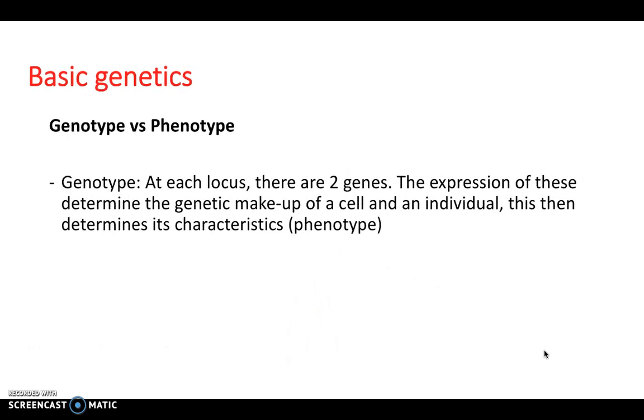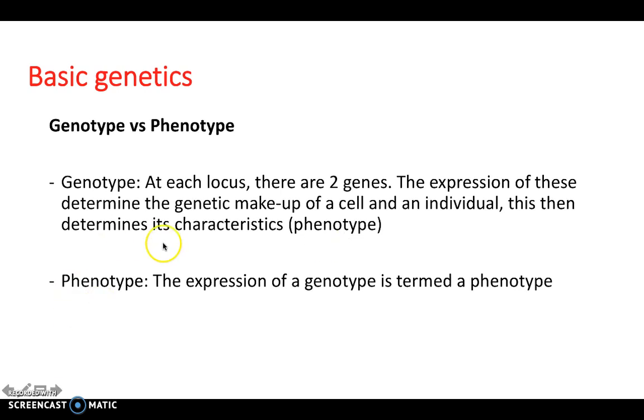So thinking about genotype and phenotype when we come to genetics, the genotype at each locus are two genes. So the expression of these determine the genetic makeup of a cell and an individual. And this in turn determines its characteristics, which in other words is its phenotype. So the genotype are the genes we have to display an eye color. But the phenotype is the actual eye color that we see as a characteristic of an individual.